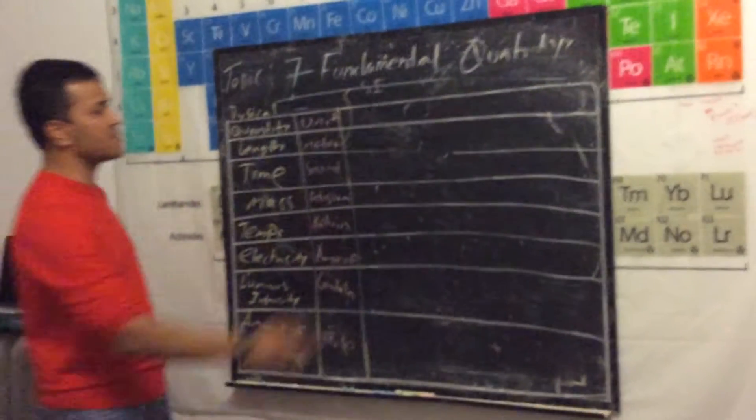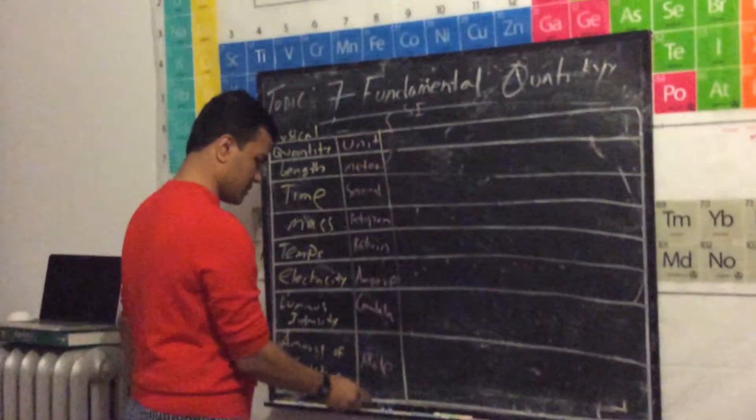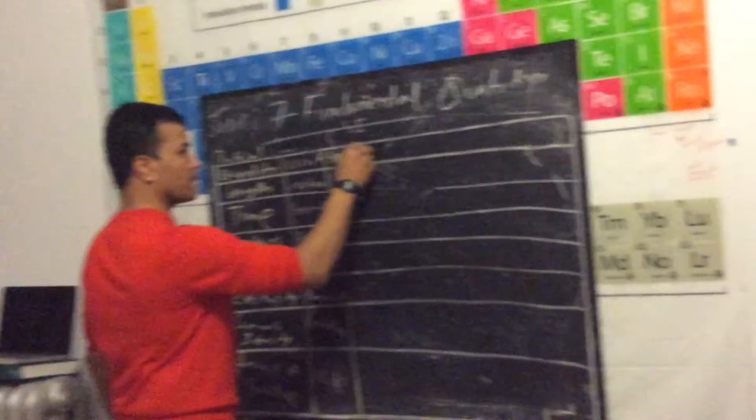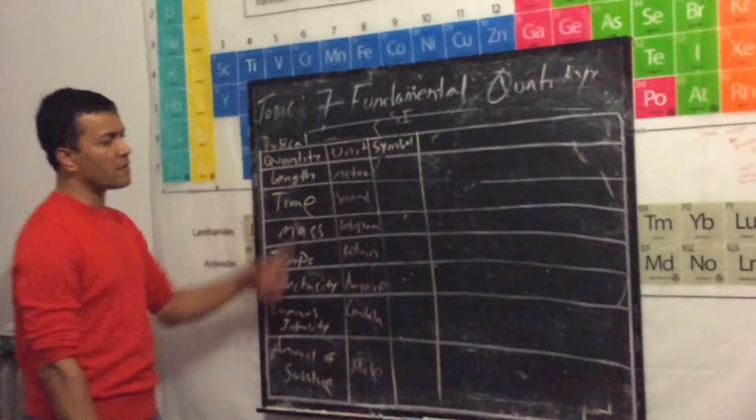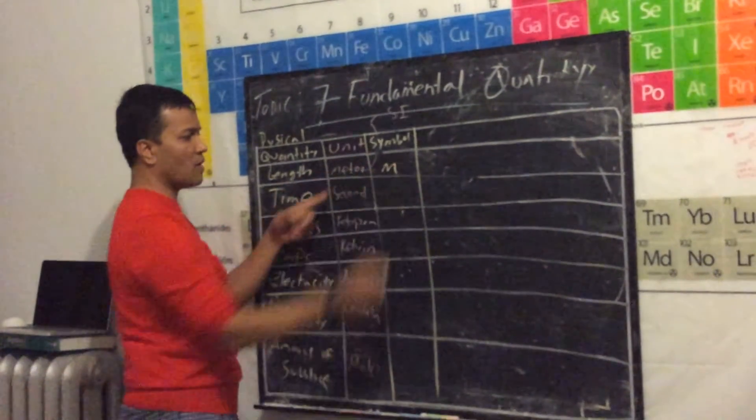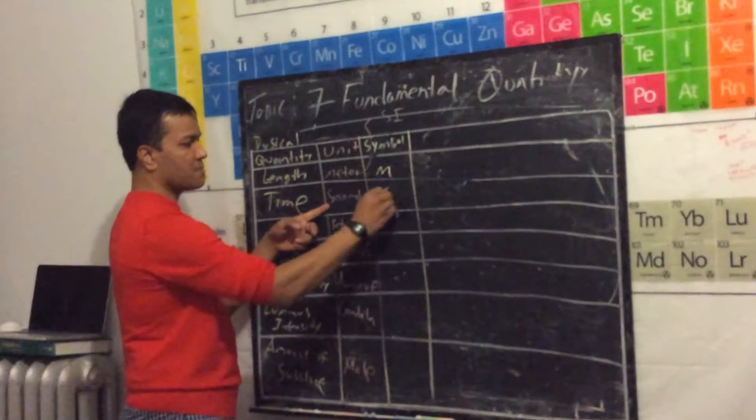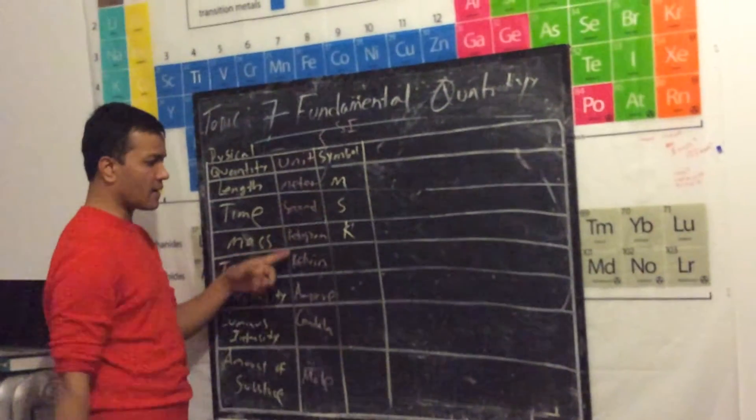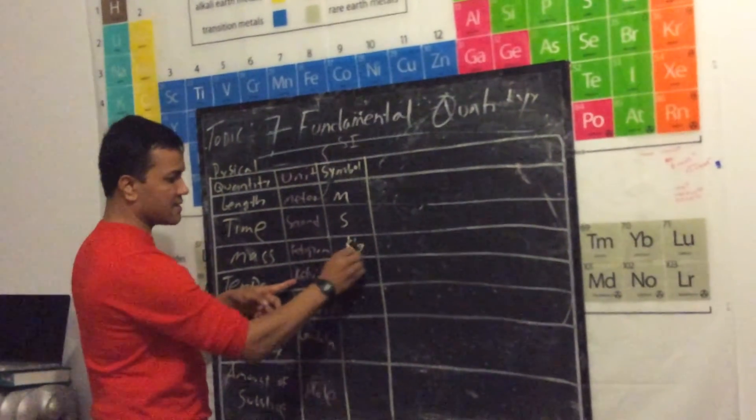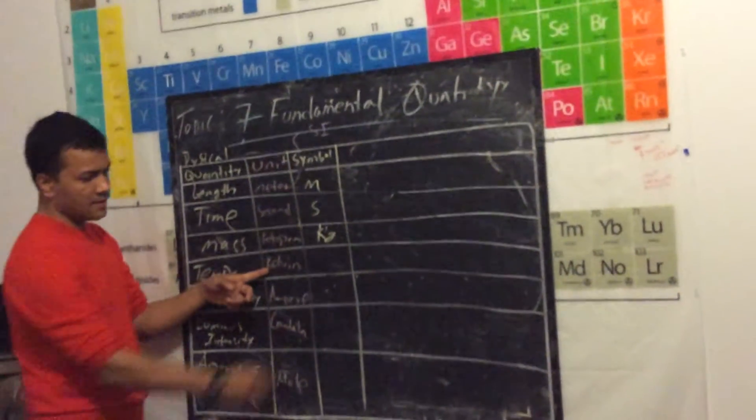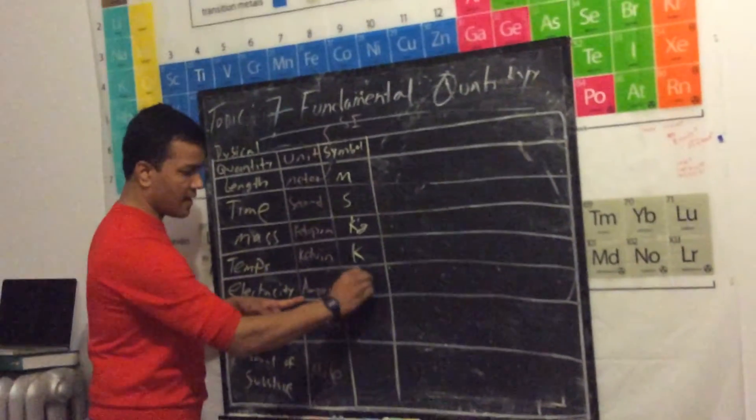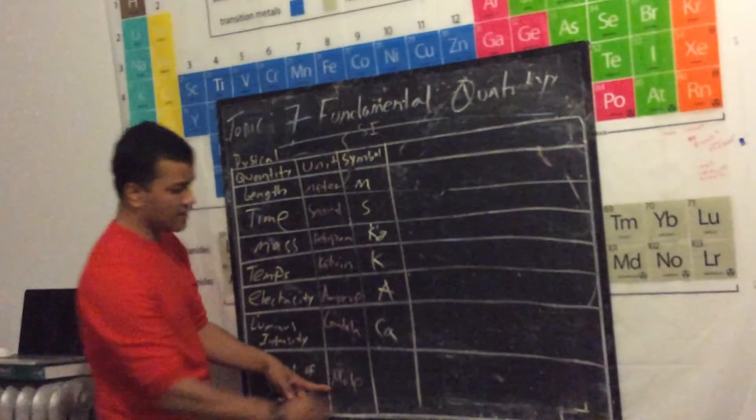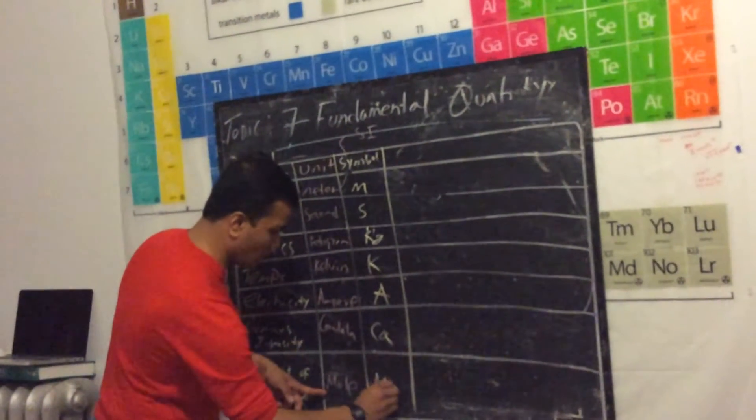Now we're going to go over the symbols, because in math and science we don't write the whole thing out. For meter, the acronym is small m. For second, small s. For kilogram, kg. For Kelvin, K. For ampere, A. For candela, cd. And for mole, small m.